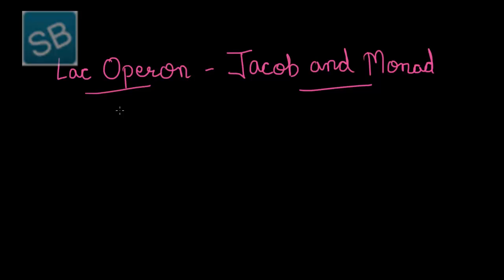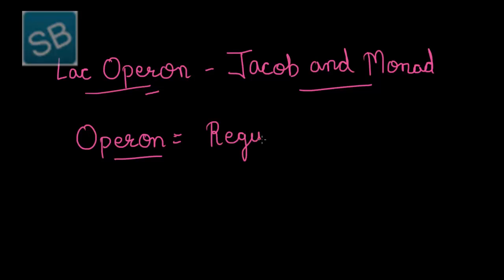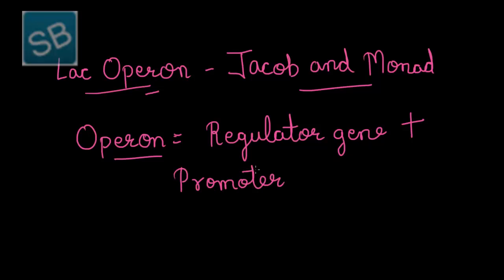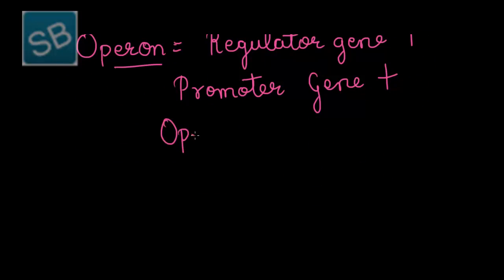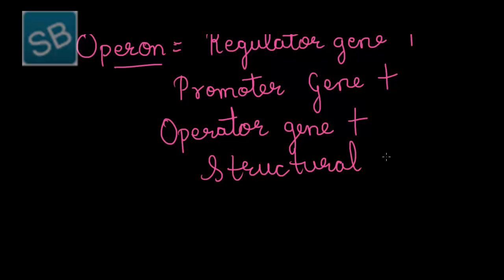Before understanding the model, let us understand what the term operon means. Operon is considered as a structure that consists of a regulator gene, promoter gene, operator gene, and structural gene. Thus these four genes together constitute the operon. The operon is basically made up of two types of genes.